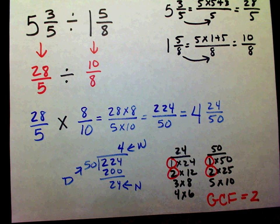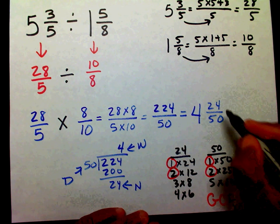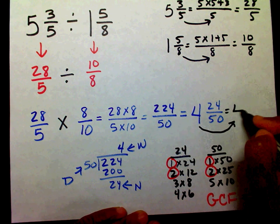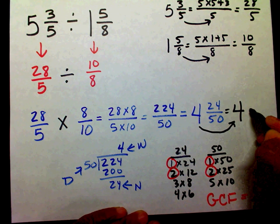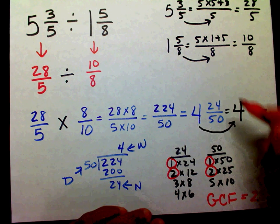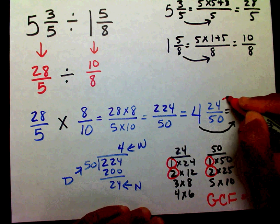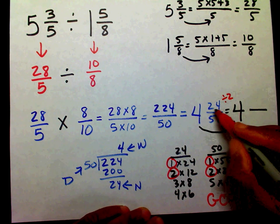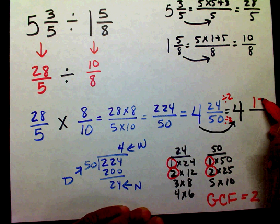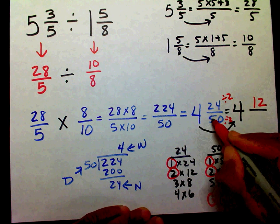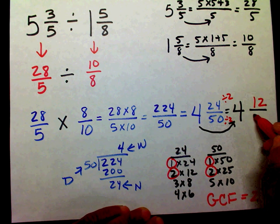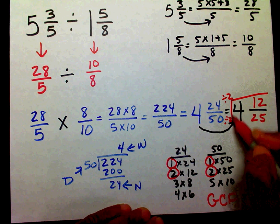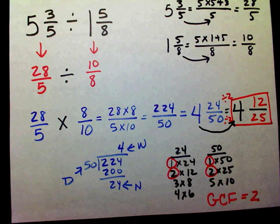I'm going to bring my four over, and divide twenty-four by two and fifty by two. Twenty-four divided by two is twelve, and fifty divided by two is twenty-five. So my final answer is four and twelve twenty-fifths.